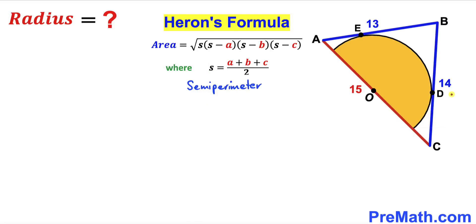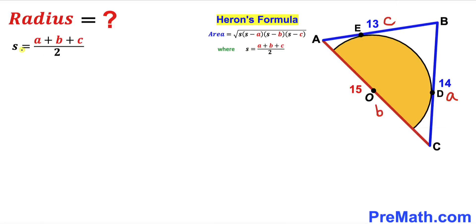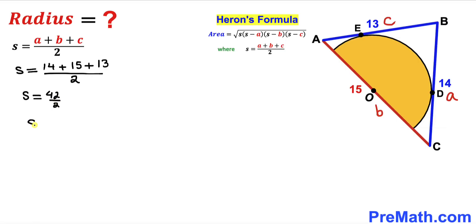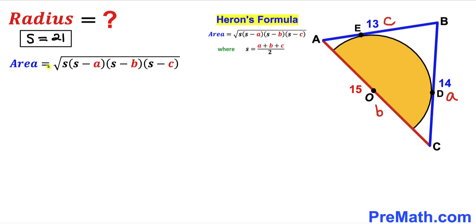Let me label the sides as lowercase a, b, and c. So our a value is 14, b value is 15, and c value is 13. We calculate S by plugging into the formula: S equals (14 plus 15 plus 13) divided by 2, which is 42 divided by 2, so S equals 21.